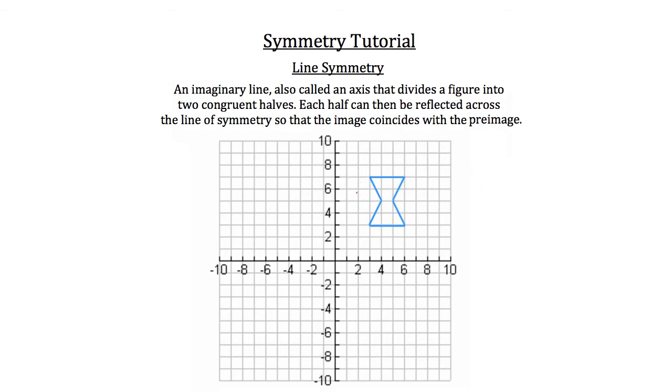I can't see any other lines that you could draw where this figure would be able to reflect across it so that the image coincides with the preimage. So the figure has two lines of symmetry, that vertical line that we originally saw and the second line which is horizontal. So those are the two types of symmetry in geometry.